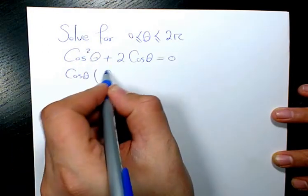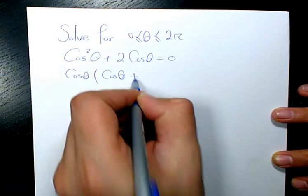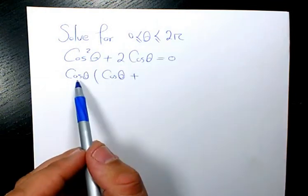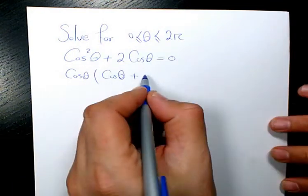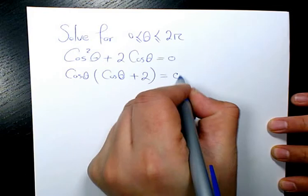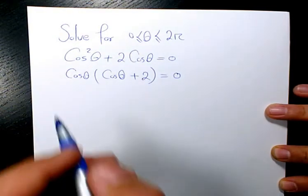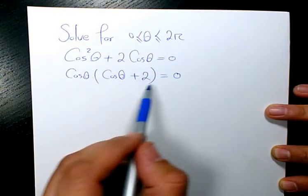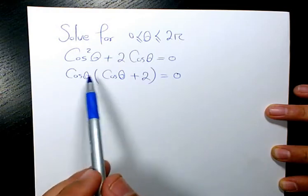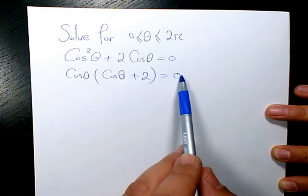Plus 2cosθ divided by cosθ, which will be 2, equals 0. So now that I've factored this, it means that I have cosθ times (cosθ + 2) = 0.